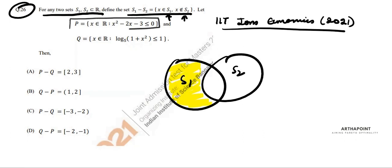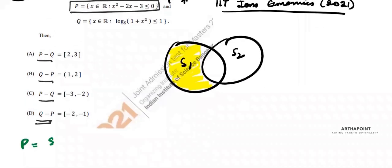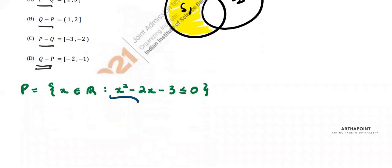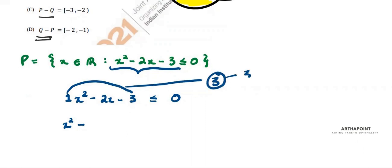We need to find P minus Q and Q minus P. P is defined as the set of all x belonging to the real numbers such that x² minus 2x minus 3 is less than or equal to 0. Let's go ahead and work this out. This is x² with coefficient 1, and 1 times 3 is 3.